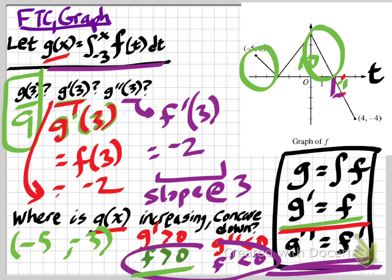And so, positive f, or increasing g, and decreasing f, or concave down g, would be also at 0 to 2. So, 0 to 2. So, we have information about g without a graph of g simply by accumulating f. All right, I'll see you in class.